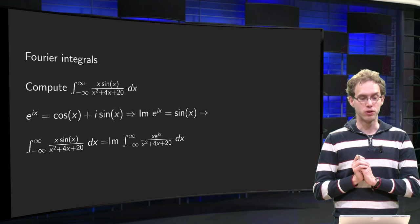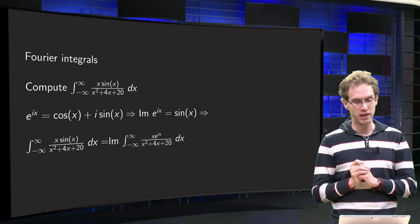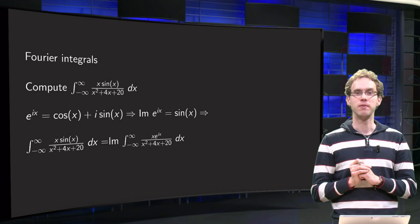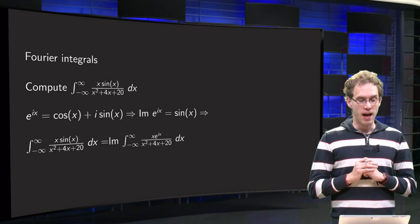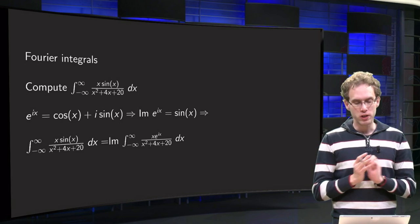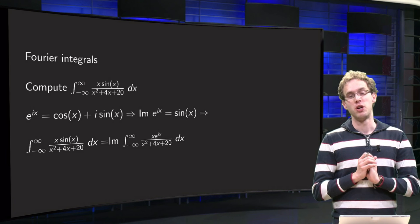We want to compute the integral of x times sine(x) over x² + 4x + 20, and we want to use complex variables.